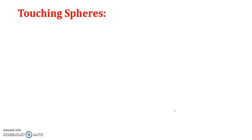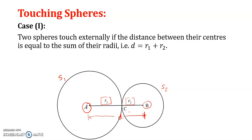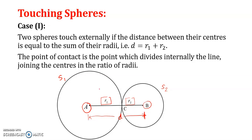The first case is when two spheres are touching each other externally. Consider sphere S₁ with center A and radius r₁, and sphere S₂ with center B and radius r₂. If these two spheres touch each other externally, then the distance d between their centers equals the sum of their radii: d = r₁ + r₂. The point of contact C is the point which divides the line segment AB internally in the ratio r₁ : r₂.